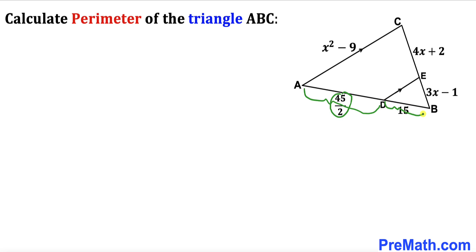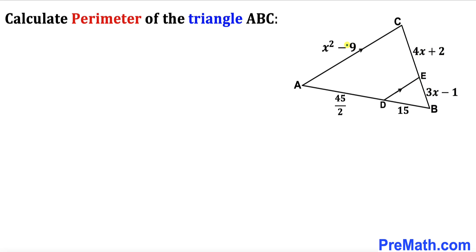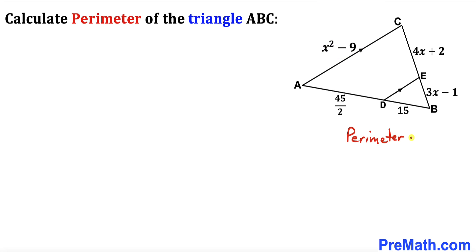Line segment BD is 15. Line segment BE is represented by 3x minus 1. Line segment CE is represented by 4x plus 2. And finally this side length AC is represented by x squared minus 9. Our task is to calculate the perimeter of this big triangle ABC.